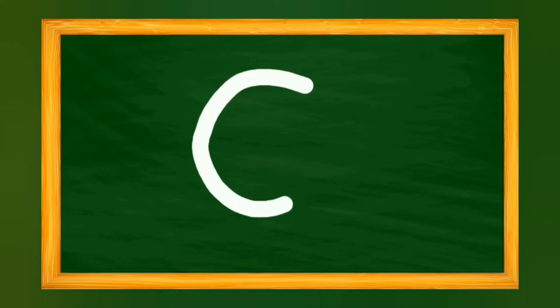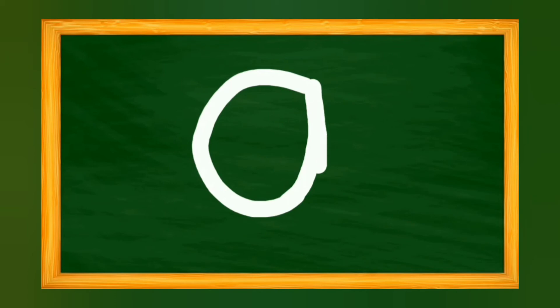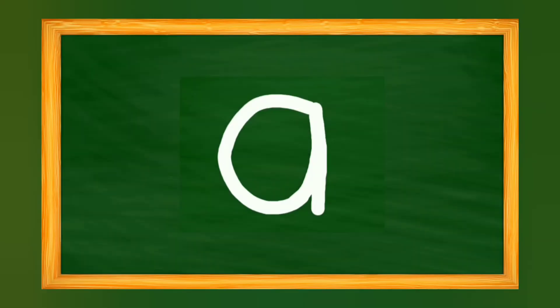Now let's see how to write small a. For small a, we are going to write a left curve — a C curve or C pattern — then go up and come down to write a standing line. This is small a.